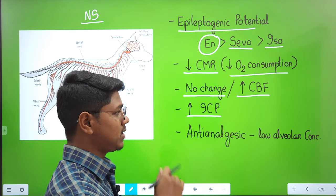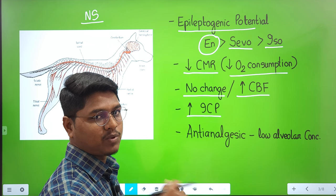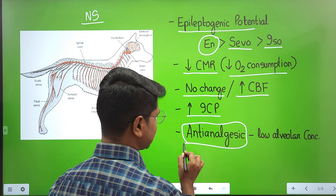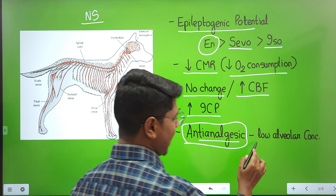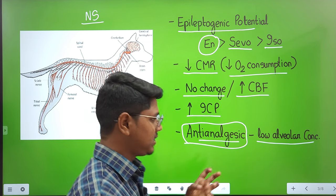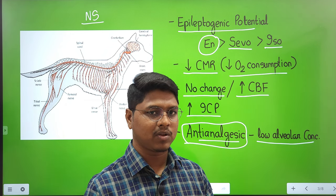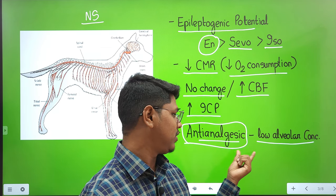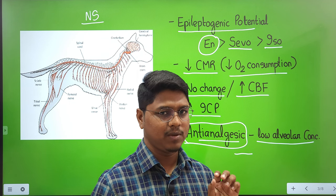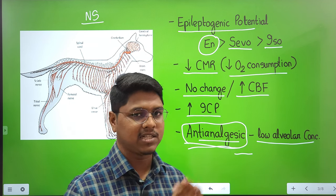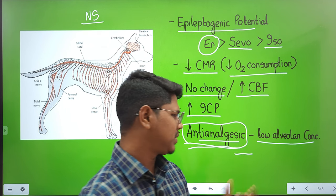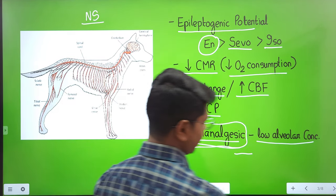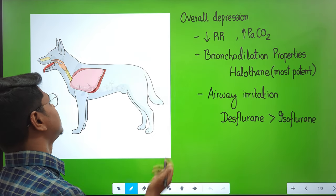Volatile anesthetics increase the ICP — intracranial pressure. So if there is meningitis where there is already high intracranial pressure, you have to use volatile anesthetics very carefully. Another property of inhalant volatile anesthetics is anti-analgesic property. It means at low alveolar concentration — when the animal is in the recovery stage and MAC or minimum alveolar concentration starts to decrease — the animal will feel more sensitive to pain. This property is known as anti-analgesia, though in practice, with analgesics provided, this effect may not be very apparent.